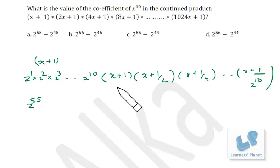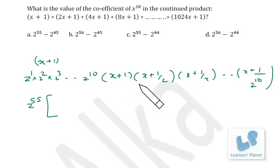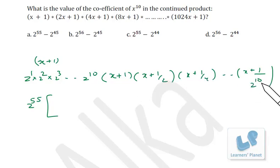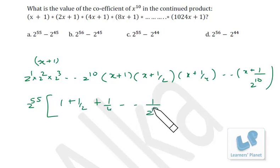Now we find the coefficient of x^10 from (x+1)(x+1/2)(x+1/4)...(x+1/2^10). The roots are −1, −1/2, −1/4, up to −1/2^10. For the coefficient of x^10, we need the negative of the sum of roots, and since the roots are already negative, the two negatives cancel. So we compute 1 + 1/2 + 1/4 + ... + 1/2^10.